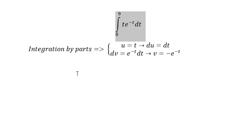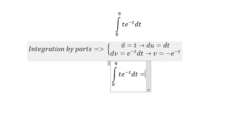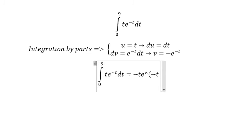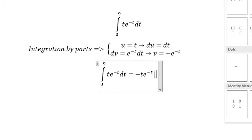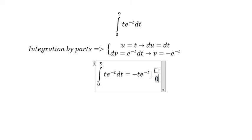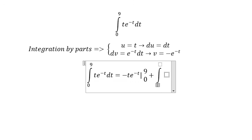Now we have this integral. We have v multiplied with u, so we get minus t e to the power of minus t. In here we have 0 and 9. Because we have the negative, this should be positive in the integral, so we have 0 and 9.